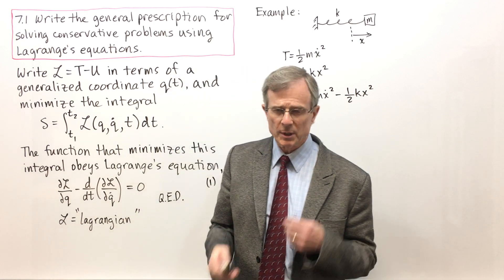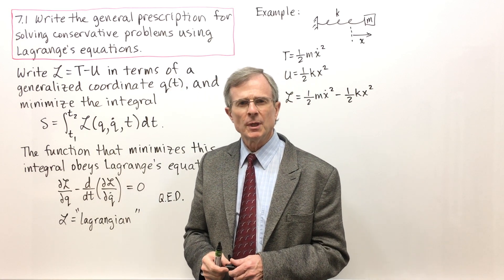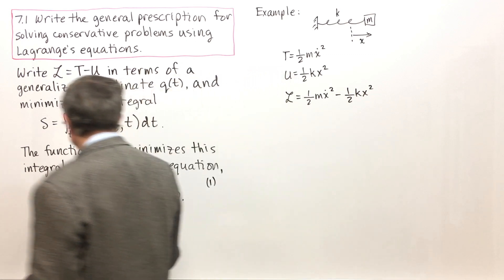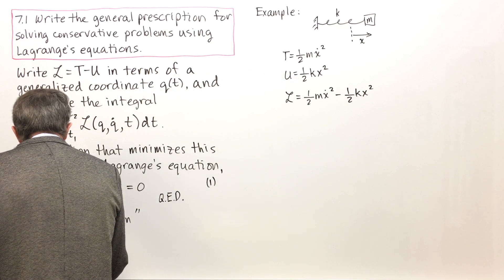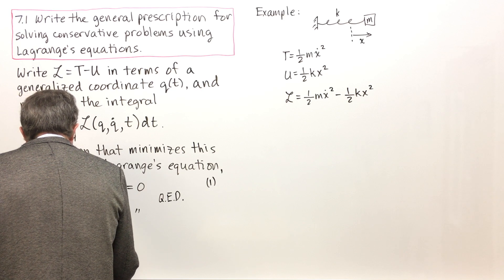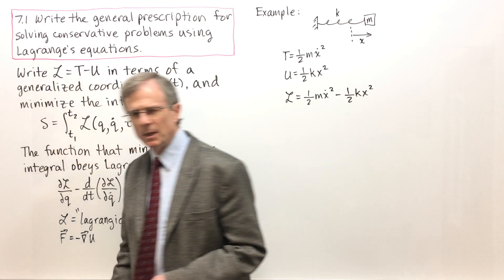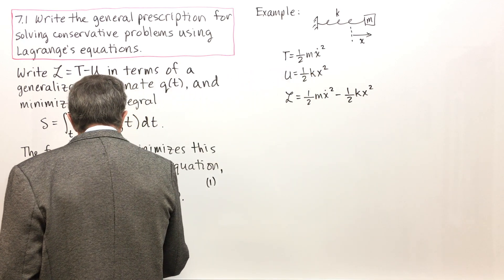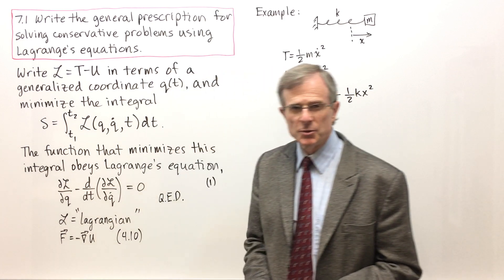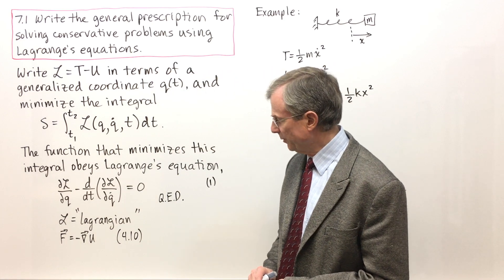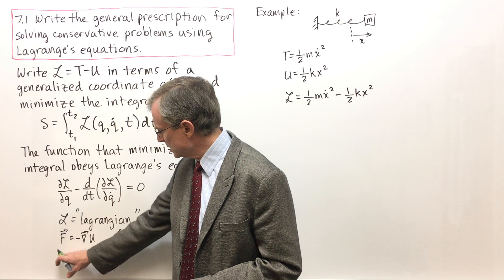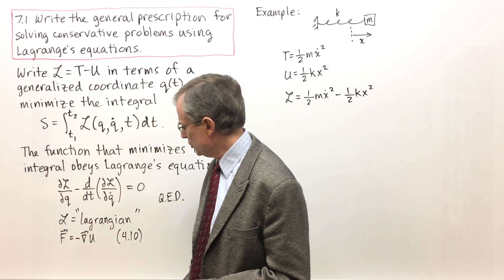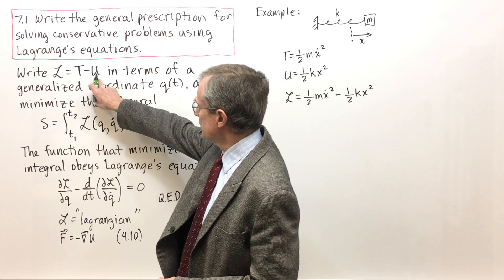As you'll recall, for conservative forces, you can write the forces as minus the gradient of some potential energy. That is Concept 4.10. We're going to write the force as the negative gradient of some potential energy, and that's what appears here.